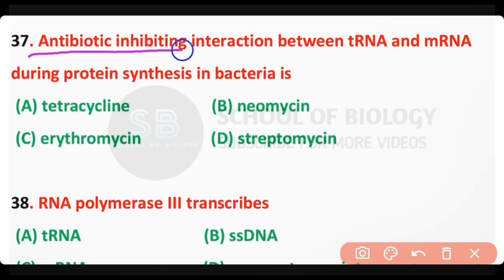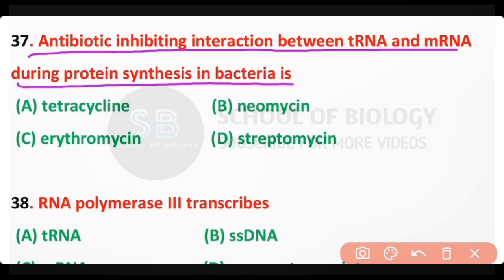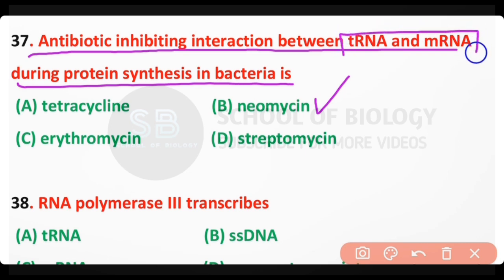Question number 37: The antibiotic inhibiting interaction between transfer RNA and messenger RNA during protein synthesis in bacteria is — Tetracycline, Neomycin, Erythromycin, or Streptomycin? The correct answer is option B: Neomycin is an antibiotic that inhibits the interaction between transfer RNA and messenger RNA during protein synthesis in bacteria.